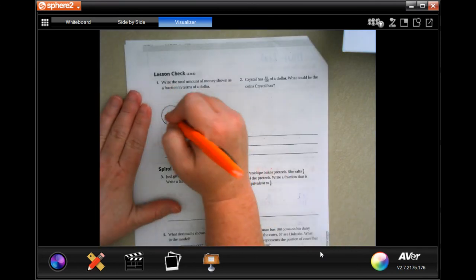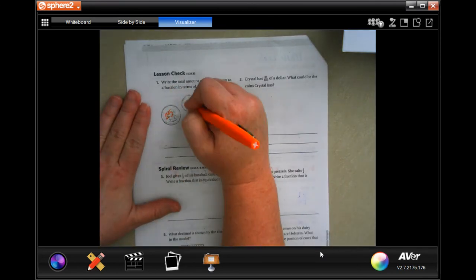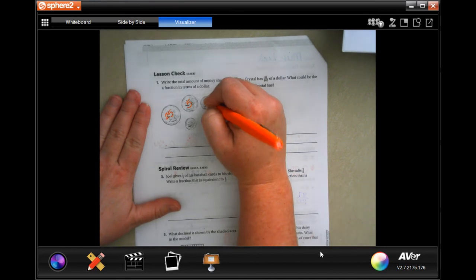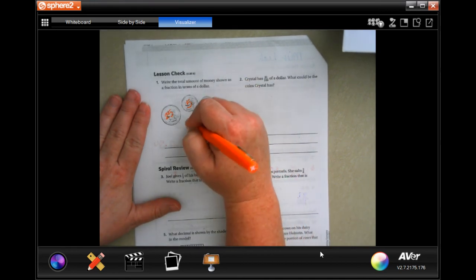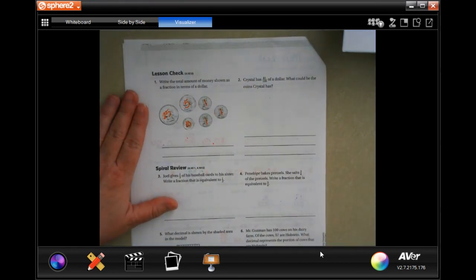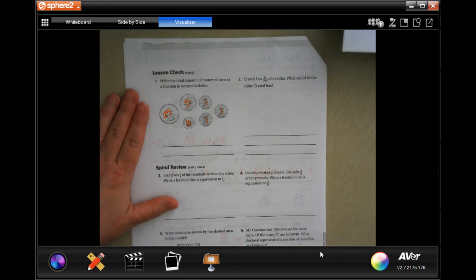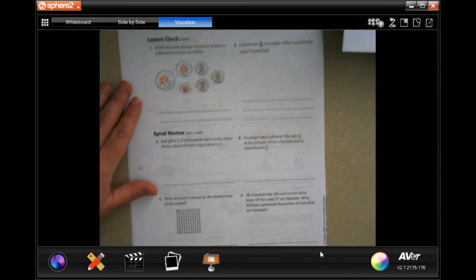You guys are going to do the lesson check. Remember that quarters are worth 25. Nickels are worth five. Ten pennies are worth one. And dimes are worth 10. And we're going to go ahead and do the spiral review together.